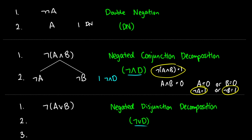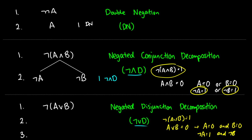What about not(A or B)? When is A or B false? Specifically when A is false and B is false — meaning not A is true and not B is true. So the decomposition rule for not(A or B) gives us not A and not B on the same branch, justified as 'not-or decomposition' from the relevant line.